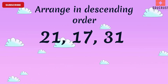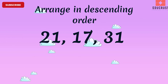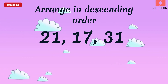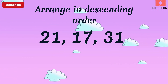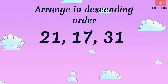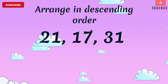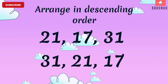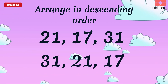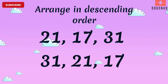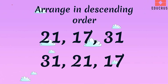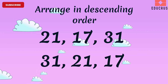Arrange the numbers 21, 17, 31 in descending order, or biggest to smallest. As per our rule, 31 will come first, then 21 will come, and 7 will come in the end. Thank you.